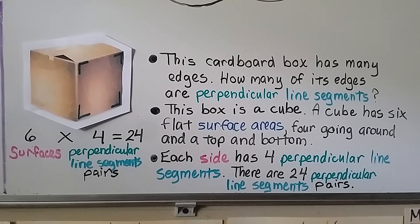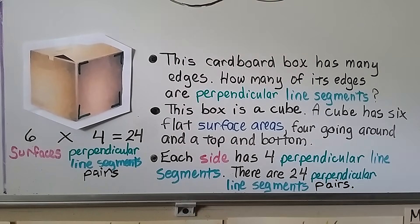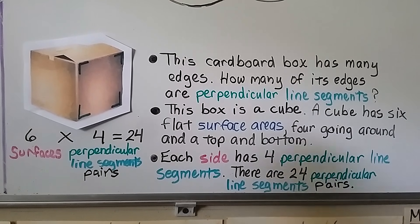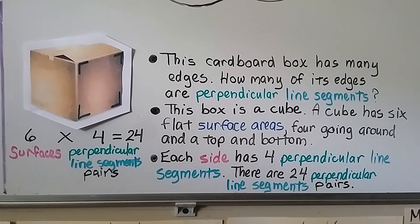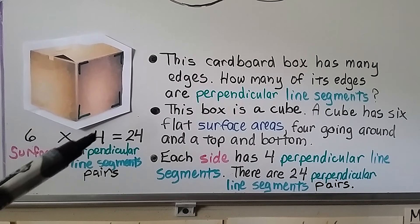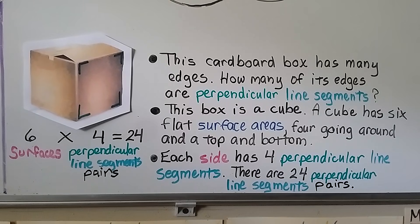This cardboard box has many edges. How many of its edges are perpendicular line segments? Well, this box is a cube and a cube has six flat surface areas — four going around and then five and six for the top and the bottom. Each surface has four perpendicular line segments. So six surfaces times four perpendicular line segment pairs equals 24. There are 24 perpendicular line segment pairs.